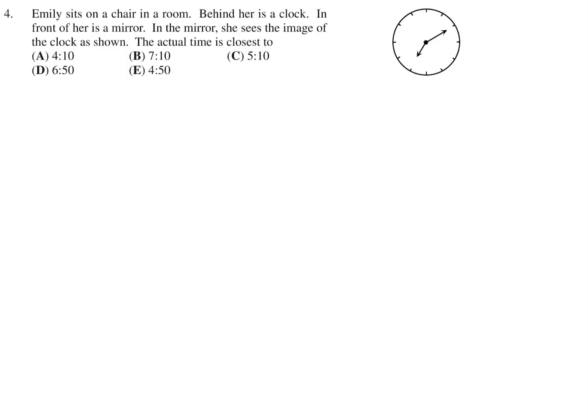Emily sits on a chair in a room. Behind her is a clock. In front of her is a mirror. In the mirror, she sees the image of the clock as shown. The actual time is closest to. So this is the image. So this is a conceptual question. You basically have to figure out what this would look like in the mirror.